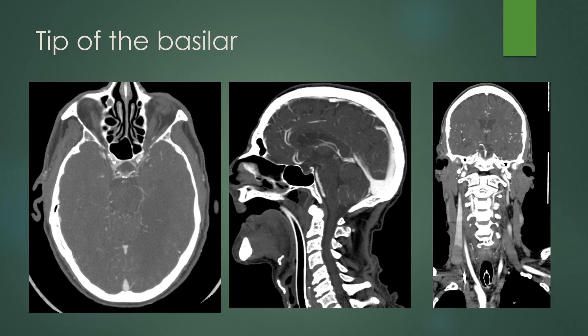This is an appearance of a tip of the basilar infarct. On the CTA image, you can see clot at the tip of the basilar and at the origin of the left PCA. On the sagittal CTA view, you can see the clot just at the tip of the basilar, and on the coronal view that filling defect is the clot at the tip of the basilar artery, extending more into the left P1 segment but showering small clots to the right as well.